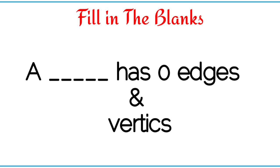A dash has two sides and four right angles. A square has one curve side and zero corners.